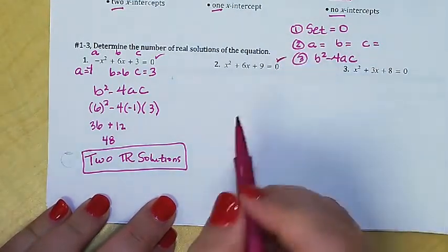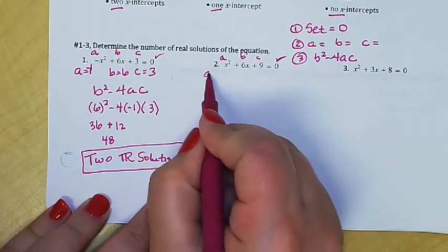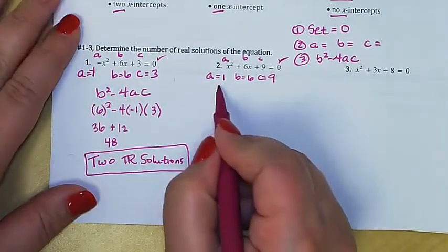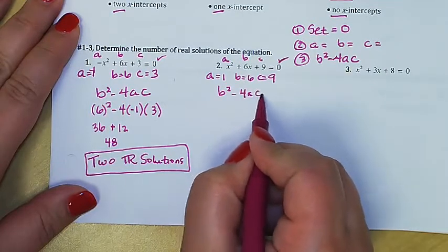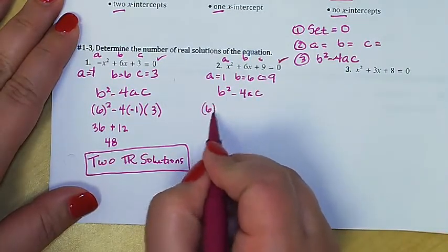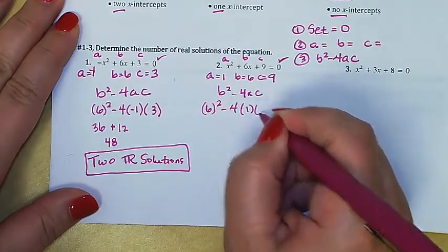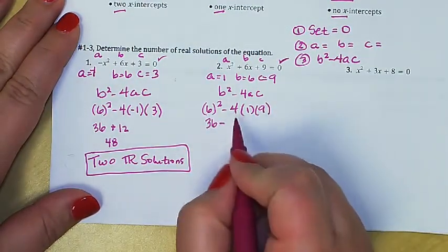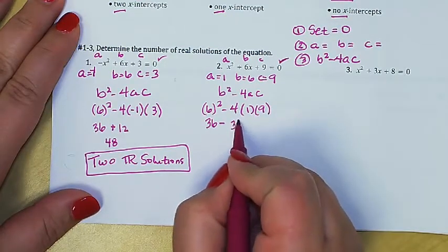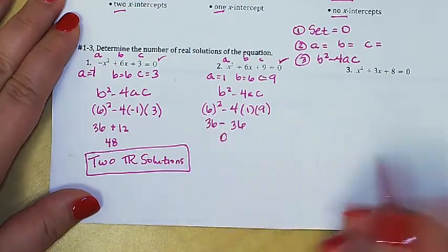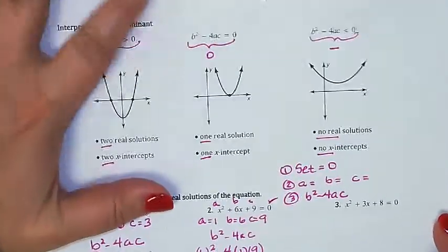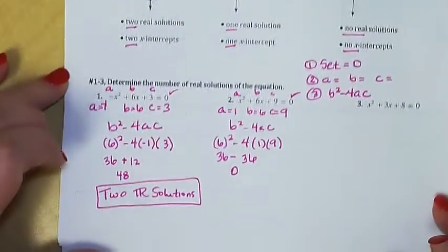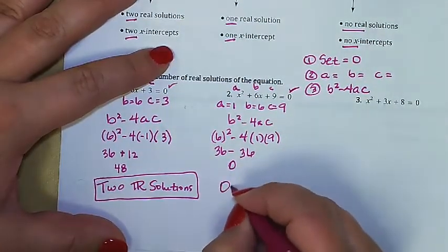Let's try the next one. Is it equal to zero? Yes — check. Identify a, b, and c: a is one, b is six, and c is nine. Using the discriminant: six squared minus four times one times nine. That's 36 minus 36, which equals zero. When the discriminant equals zero, the quadratic has exactly one real solution.